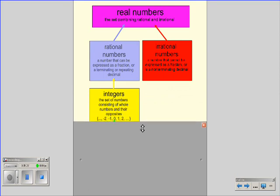The rational numbers can then be broken down into multiple subsets. First, starting with the next largest set, which is the integers. This is the set of numbers consisting of whole numbers and their opposites. So all those positive numbers and negative numbers. The rational numbers are all the numbers in between, those fractions.